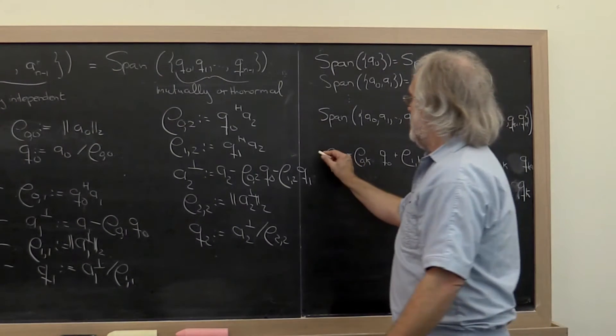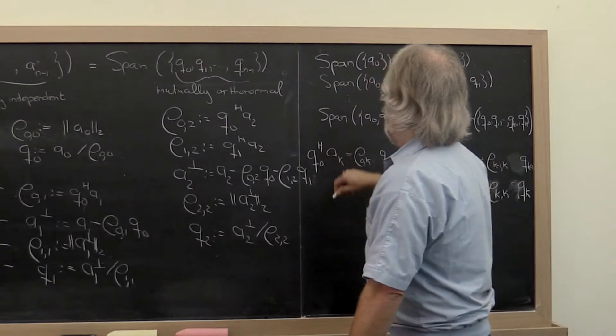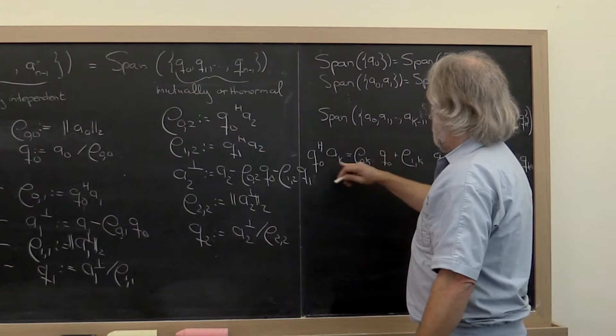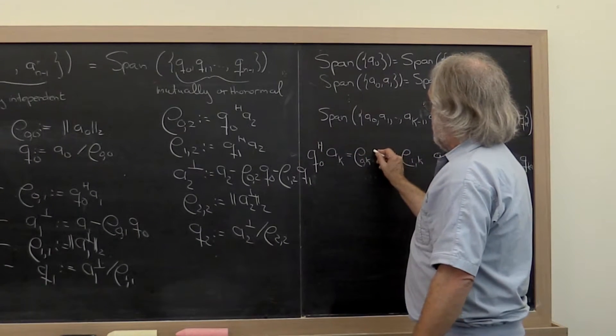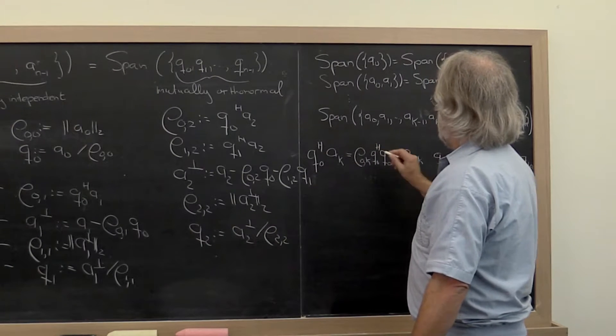If I now take the dot product of Q0 with Ak, then that's the same as propagating that in and distributing it. And therefore I get Q0 transpose here.